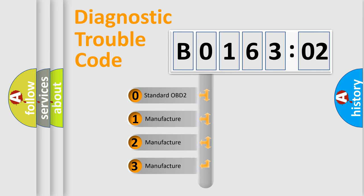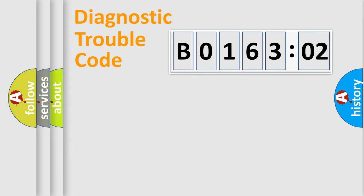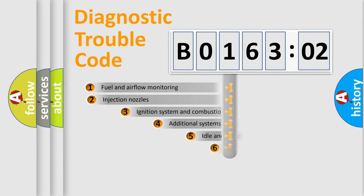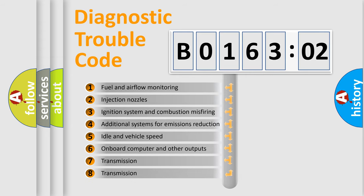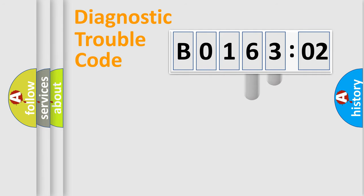If the second character is expressed as 0, it is a standardized error. In the case of numbers 1, 2, or 3, it is a manufacturer-specific error. The third character specifies a subset of errors. The distribution shown is valid only for the standardized DTC code. Only the last two characters define the specific fault of the group.